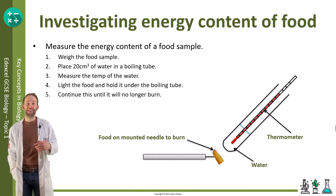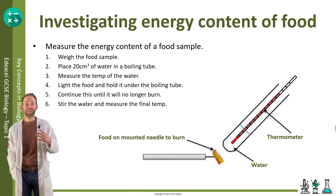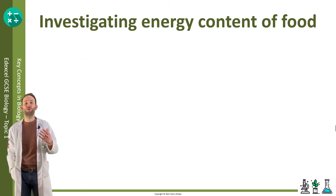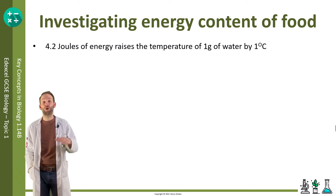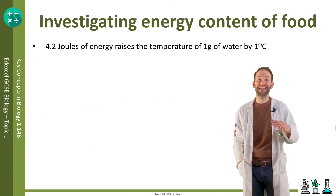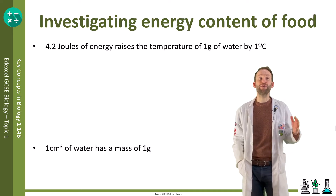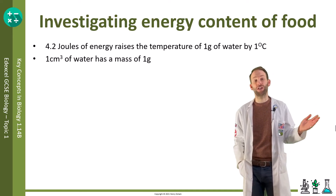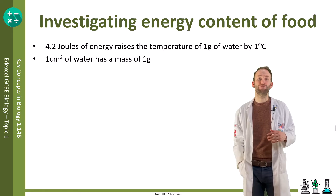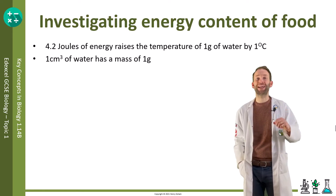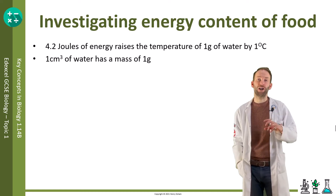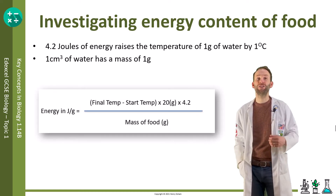That heat is used to heat up the water, and then you check how much the water has heated up in degrees Celsius at the end of the experiment. We know that in order to raise the temperature of one gram of water by one degree Celsius it takes 4.2 joules of energy. We also know that one centimeter cubed of water has a mass of one gram, so with 20 centimeters cubed we have 20 grams of water in our test tube.